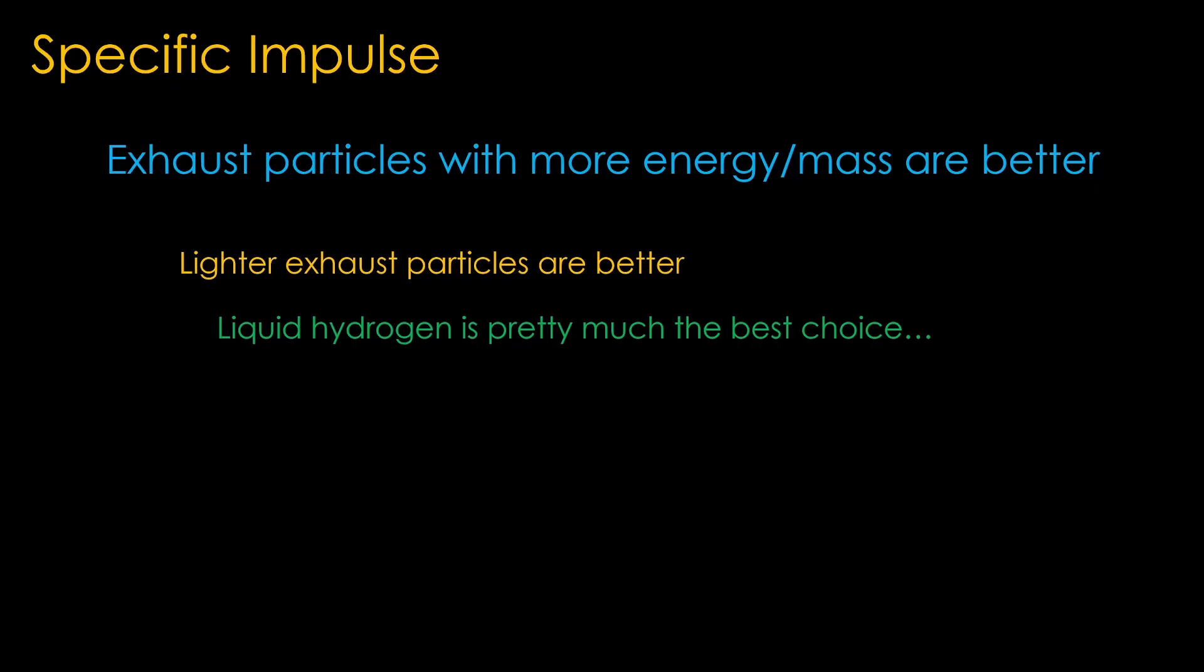Nuclear thermal rockets could use different propellants, but they generally use liquid hydrogen as it gives the lightest exhaust particles. That gives them a big advantage over chemical rockets.